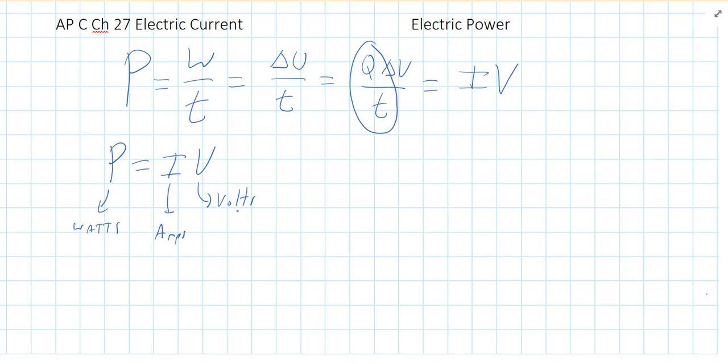Now there are other versions of this, because if we use Ohm's law, you can use V equals IR and do some substituting. For instance, if I get rid of the V in the power equation, you would get I squared times R. If I were to eliminate the I in the equation, which is V over R, you get V squared over R. So you can use any one of those three versions of the power equation. It just depends on what they give you.